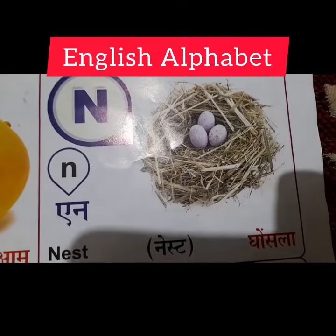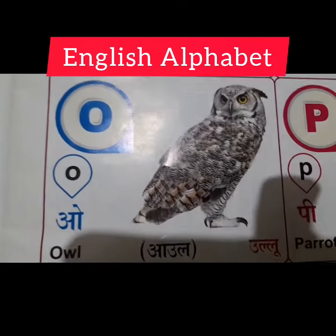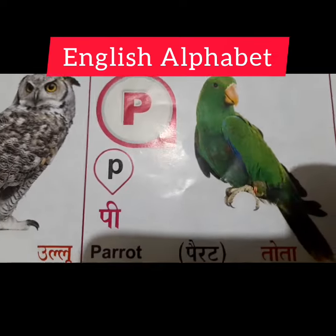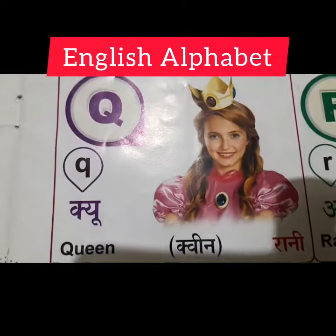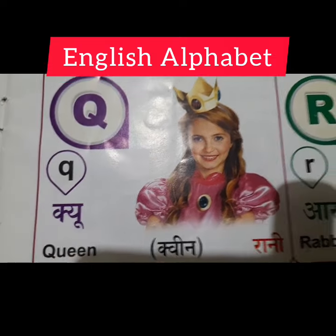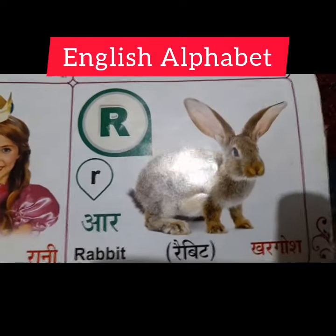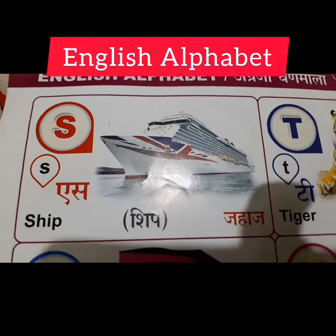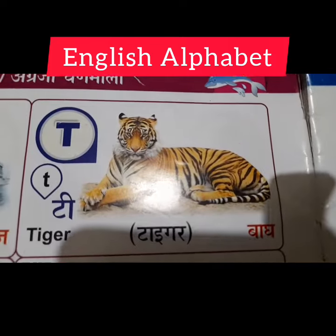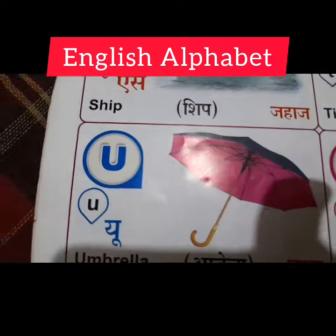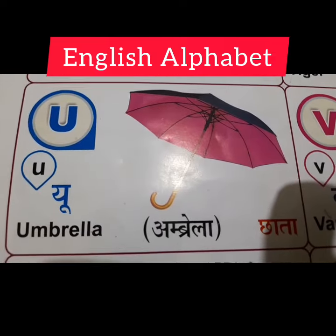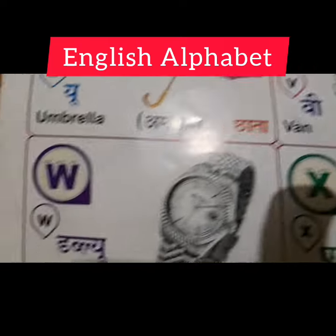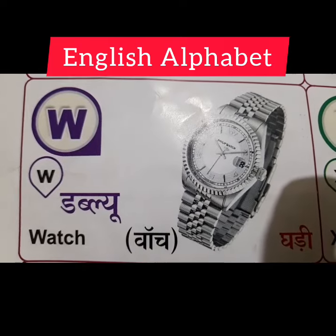N for Nest. O for Orange. P for Parrot. Q for Queen. R for Rabbit. S for Ship. T for Tiger. U for Umbrella. V for Van. W for Watch.